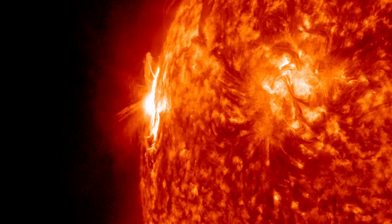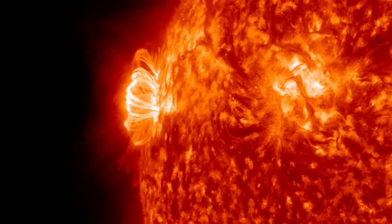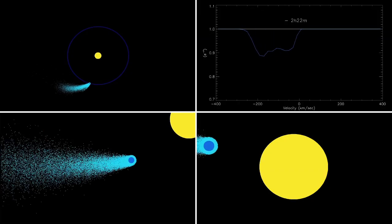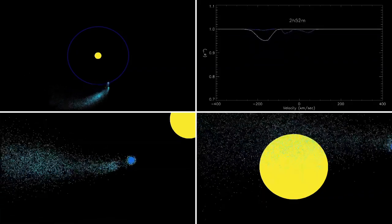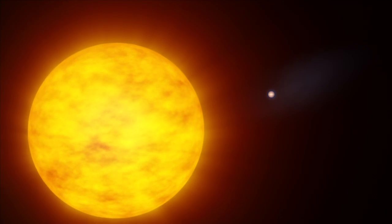Similar flares happen frequently on the Sun. But because the planet is so big and so close to its star, this X-ray blast had an outsized effect, heating the planet's atmosphere and sweeping away 1,000 tons of gas each second. The escaping gas gave the planet a comet-like tail.